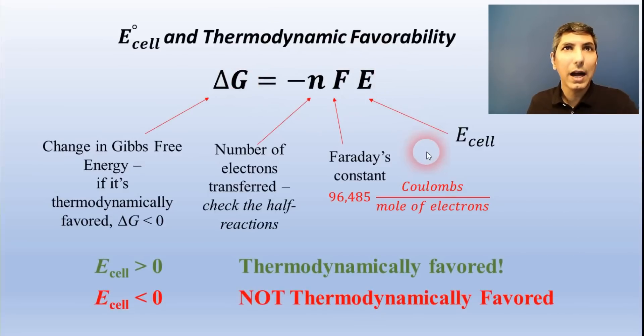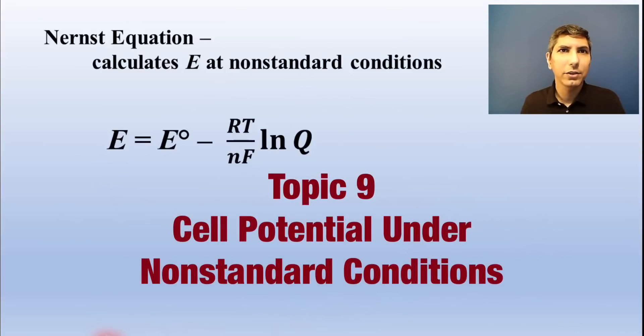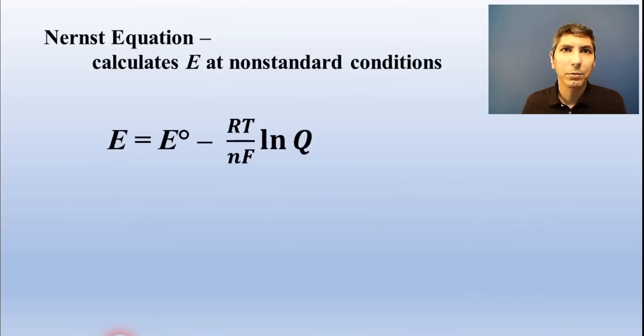Cells with a positive voltage are thermodynamically favored, while cells with negative voltage are unfavored and would need some external power source. We normally calculate cell potentials at standard conditions, which honestly aren't that common in the real world. For non-standard conditions, we use the Nernst equation.